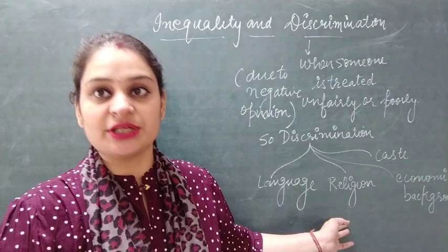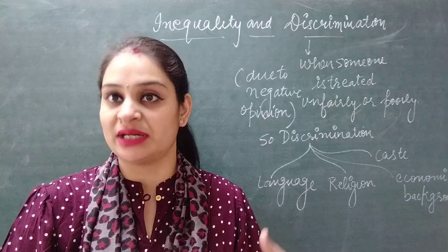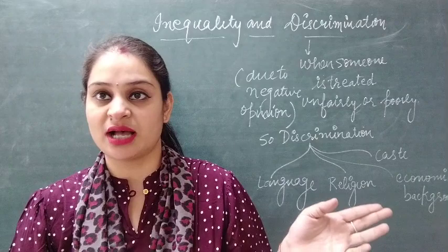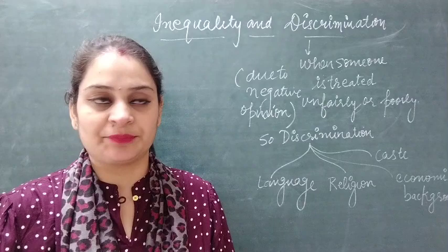Discrimination is based on different languages spoken by people, different religions followed by people, economic background — whether someone belongs to a well-off family or a middle-class family — and caste, as we categorize caste into lower caste and upper caste. These are the dimensions on which discrimination happens in our society.